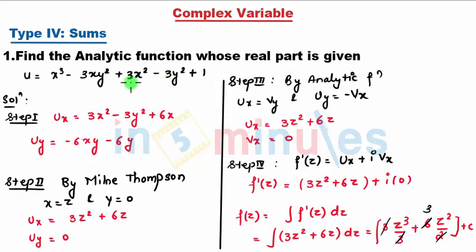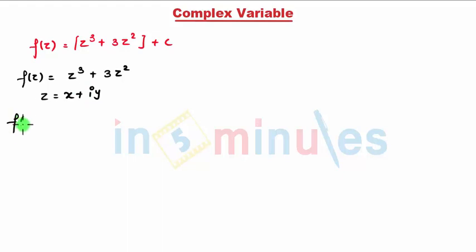In this way, you can find f(z). Now, let's find v to verify u. For that, I need to write z = x + iy. So f(z) = (x + iy)³ + 3(x + iy)².